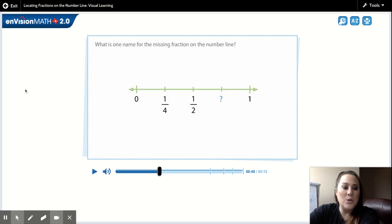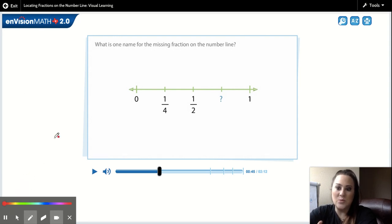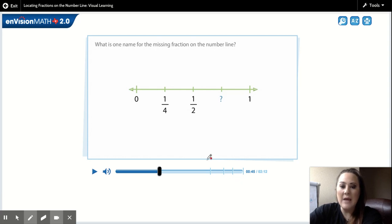Okay, so we are going to have to apply those skills that we learned last week to be able to answer this question. I first need to see how many equal parts this number line is divided into. I have one, two, three, four. So I know with that information that my denominator is going to be four. Now I need to count and stop at the place that they are asking me to identify the missing fraction at. So I start at zero. I go one, two, three. So the name for the missing fraction on this number line is three-fourths.